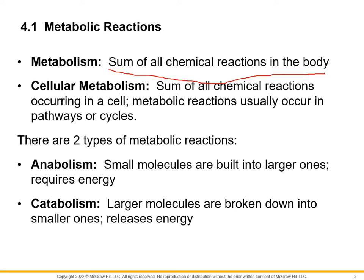Just to remind you, we have two types: anabolic and catabolic — we talked about this earlier in one of the previous chapters. Anabolic, or anabolism, is when we take smaller molecules and build them into larger ones. In Chapter 2, when we were looking at chemical reactions, we called it a synthesis reaction, so synthesis reactions and anabolism are the same thing. Catabolism is breaking things down — I take a larger molecule and break it into smaller molecules. This one releases energy, and we call these decomposition reactions back in Chapter 2.